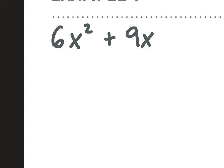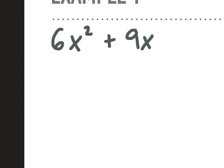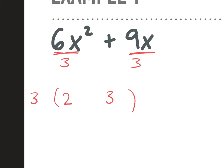So example 1. Do we have anything in common between these two terms? Start with the numbers — any numbers that 6 or 9 have in common? 3. So we can divide out a 3 from both of these, taking it out of our expression. What's 6 divided by 3? 2. So we're left with a 2. And what's 9 divided by 3? 3. And then do we have anything else in common — any variables? An x. So we're also dividing out an x from both of these.